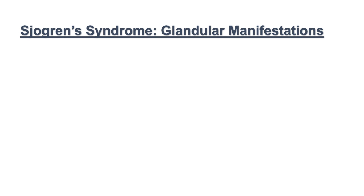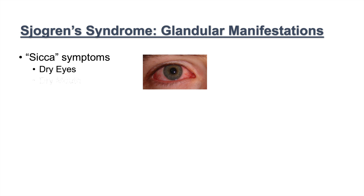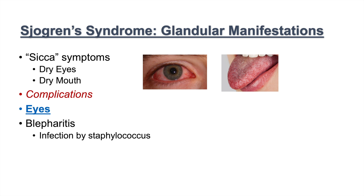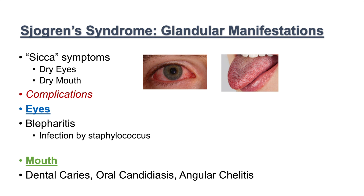When we look at the clinical manifestations of Sjogren's syndrome, we generally split them into glandular and extra-glandular manifestations. The glandular manifestations are the sicca symptoms — those dry symptoms: dry eyes and dry mouth. Complications from dry eyes include an increased risk for blepharitis, which is inflammation of the eyelids generally due to staphylococcus infection. Dry mouth increases the risk for dental caries, oral candidiasis, and angular cheilitis.